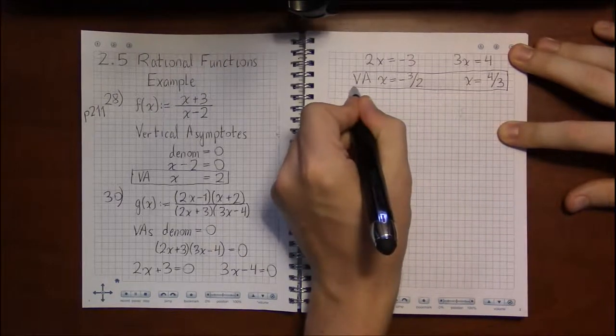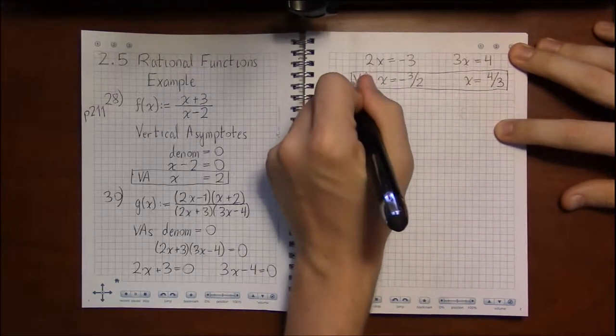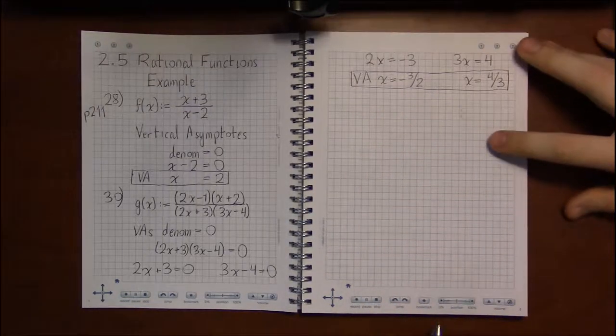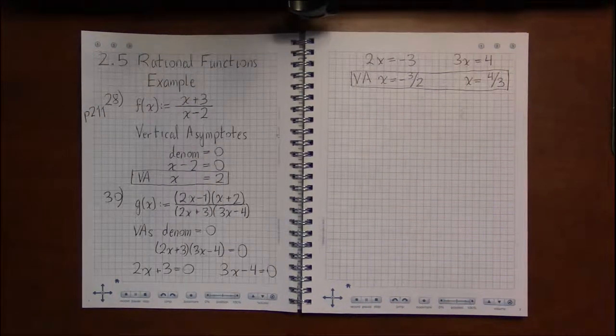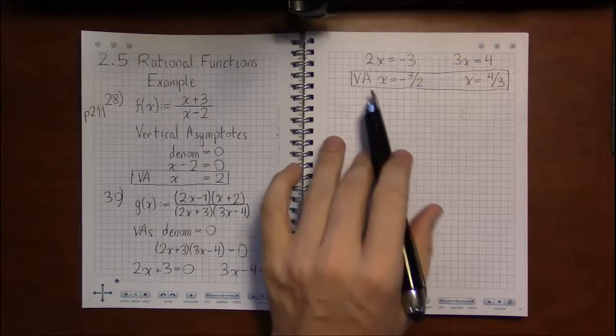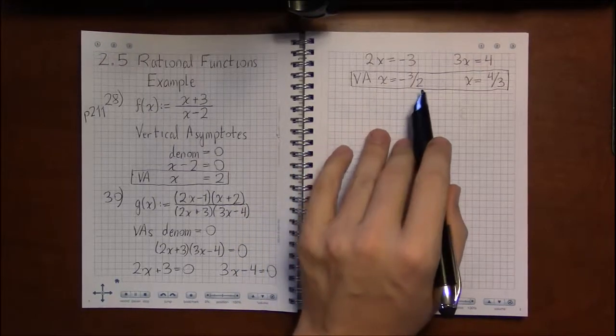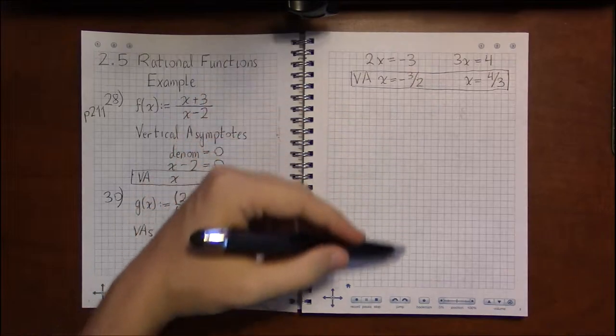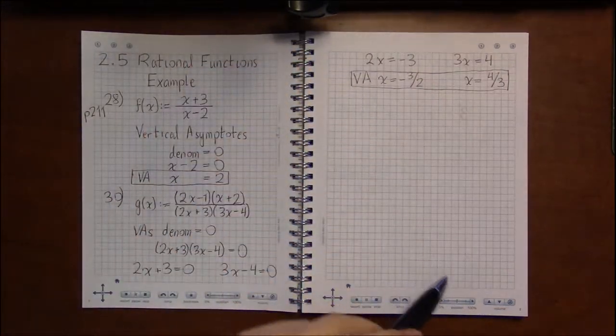And these two turn out to be our vertical asymptotes. You may notice that vertical asymptotes always take the form of x equals some number. And that's what makes them vertical, because whenever you have x equals a number and you graph that, that's just a vertical line.